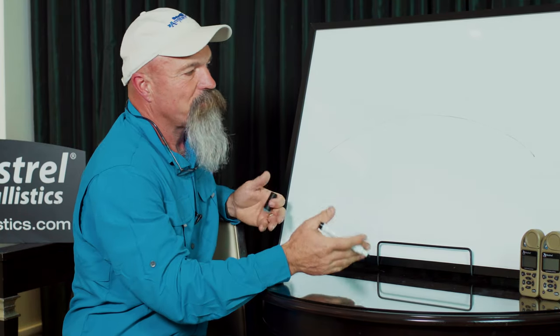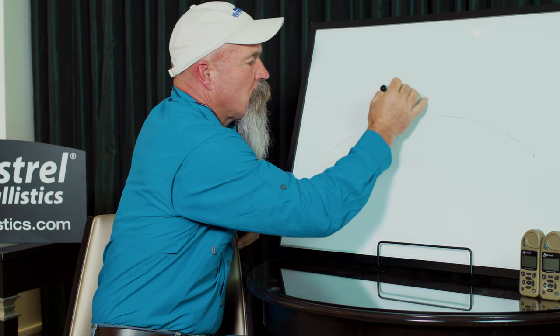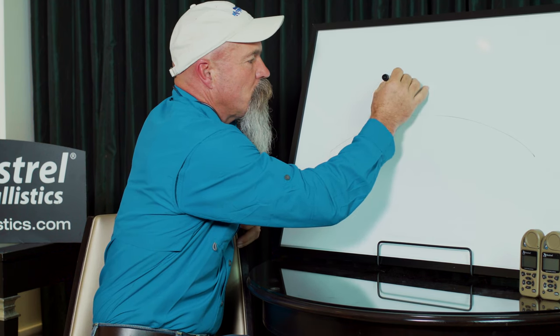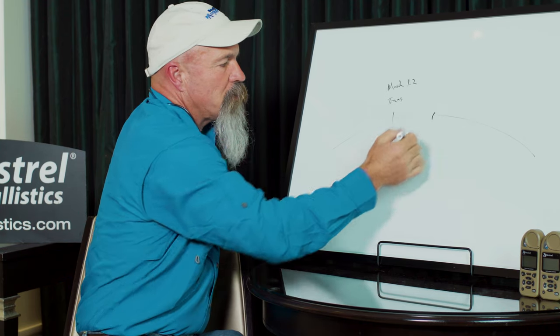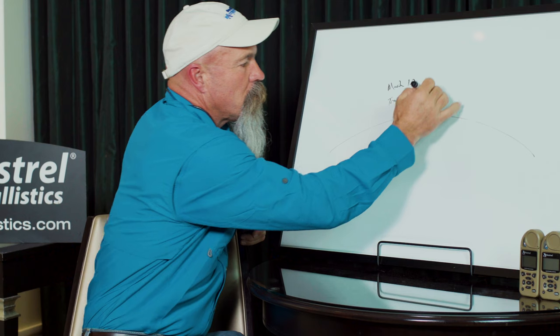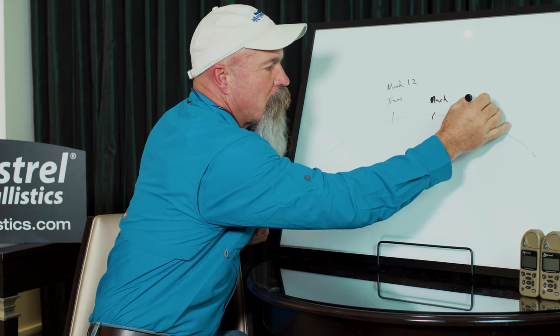So this would be a normal flight path of the bullet. Here we're just going to say this is trans. Alright, so this is Mach 1.2. Alright, so here would be subsonic, Mach 1. And we'll say this is Mach 0.9.